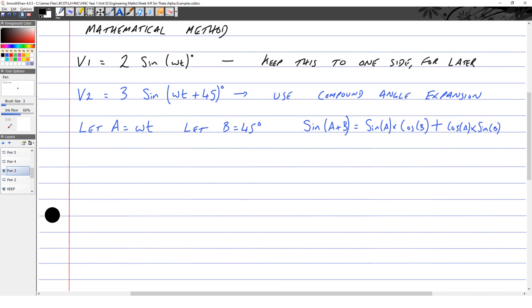So for V2, it's three lots of sin(ωt) × cos(45°) + cos(ωt) × sin(45°). That's three lots of sin(ωt) × 0.707, which is the sine of 45 degrees. Use your calculator in degrees mode.